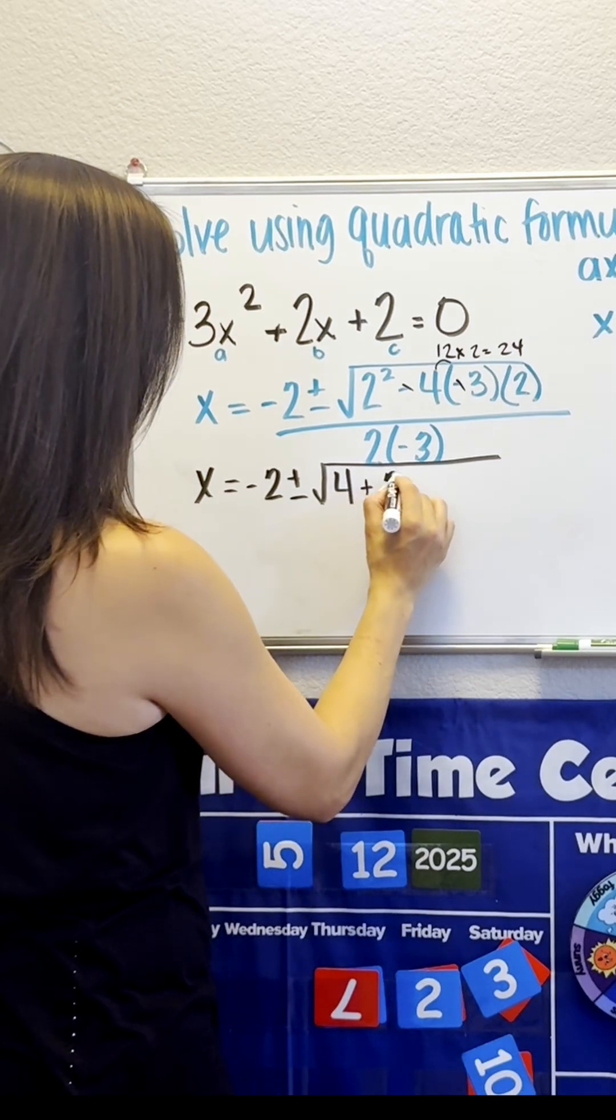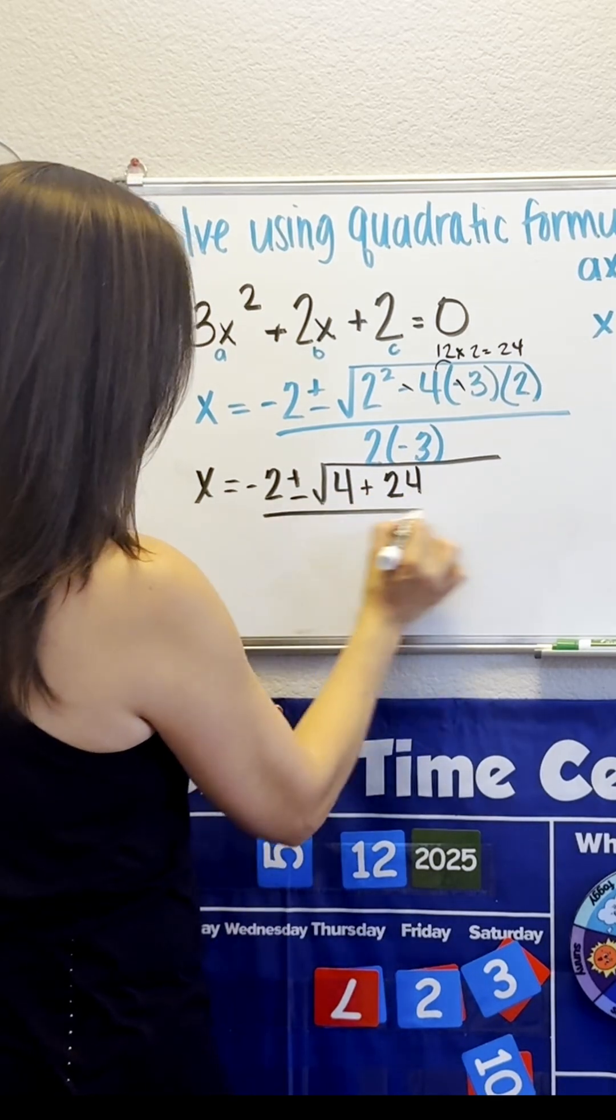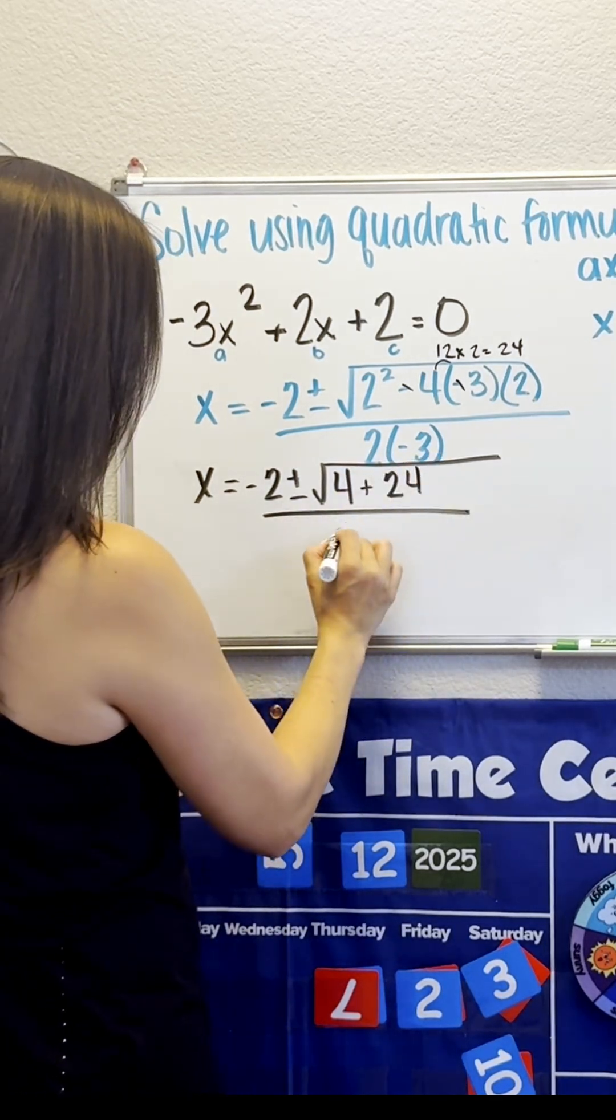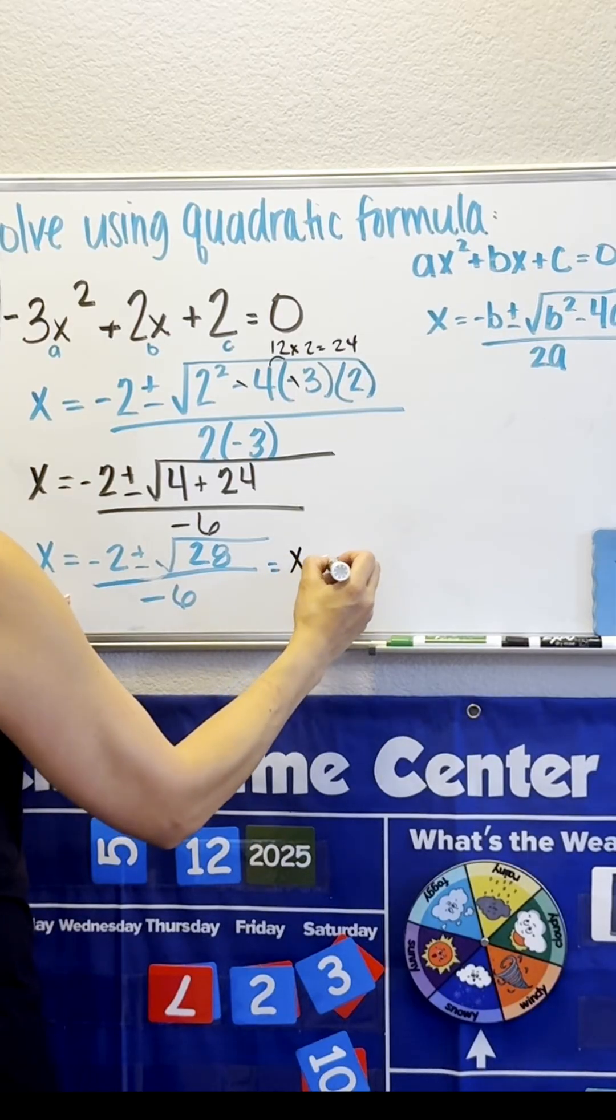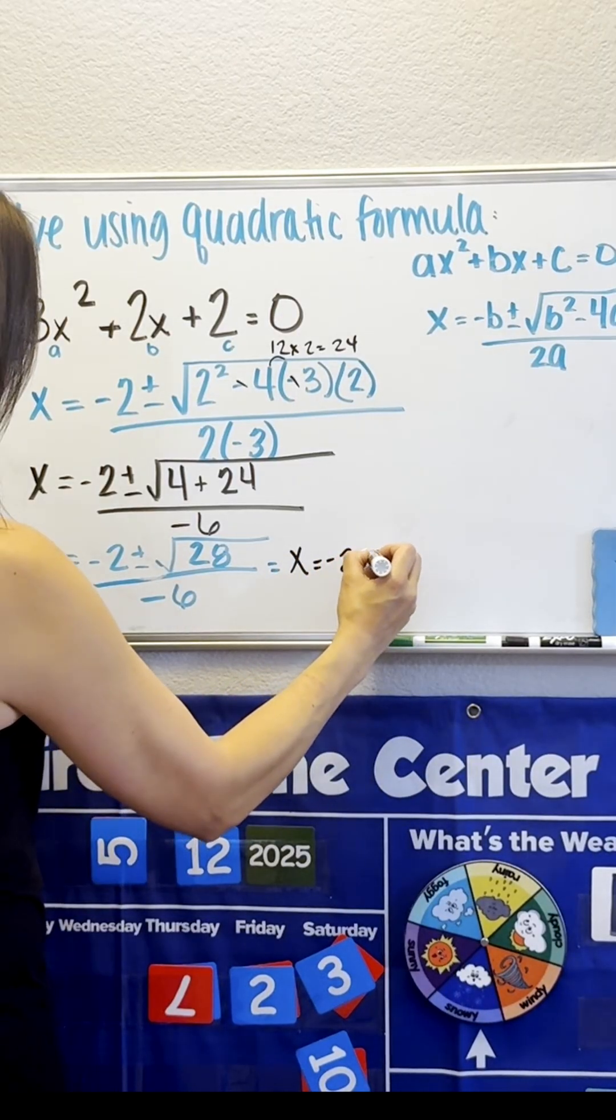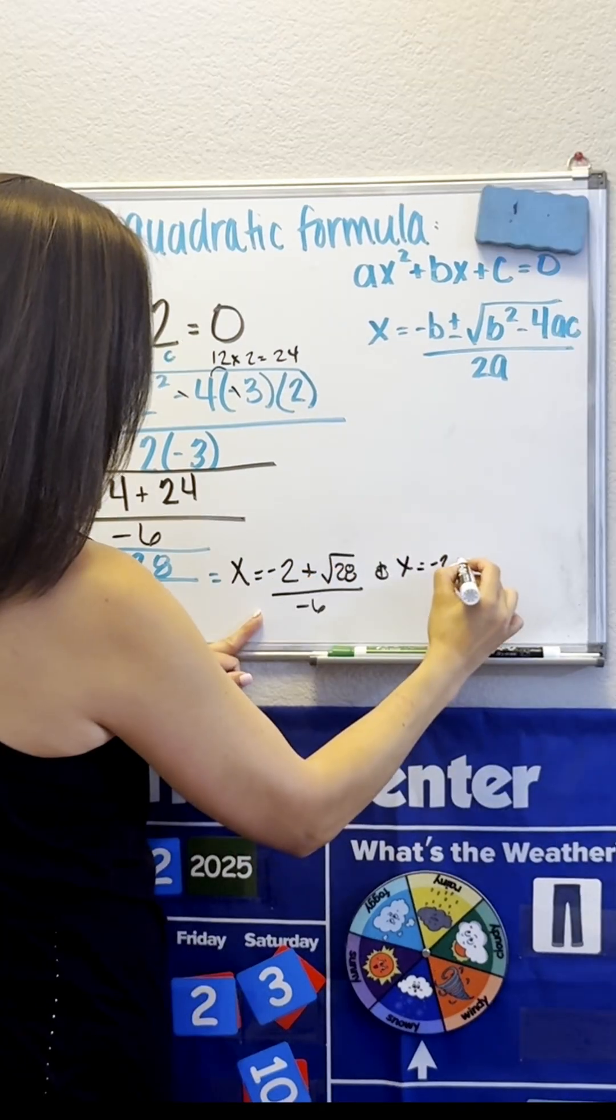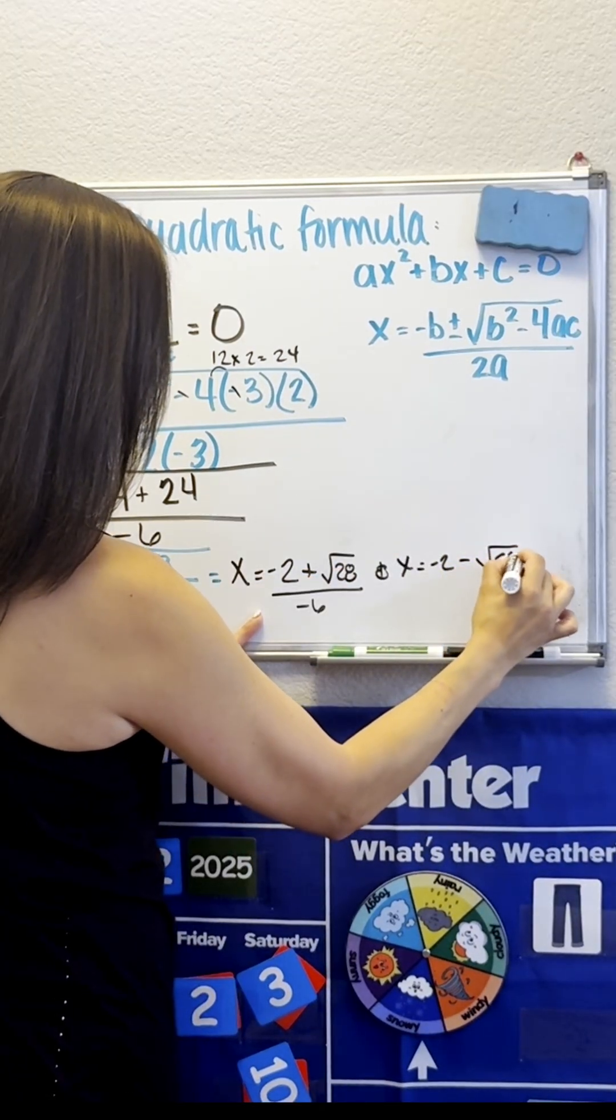So 4 plus 24 all over 2 times negative 3, which gives us negative 6. X equals negative 2 plus the square root of 28 minus the square root of 28,